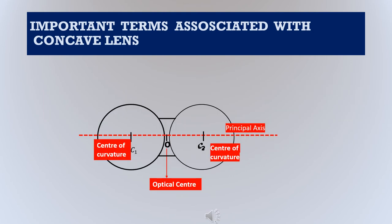For a concave lens, we mark the principal axis, the center of curvature, and the optical center as shown in the diagram. Please draw, label, and practice it for both convex lens and concave lens.